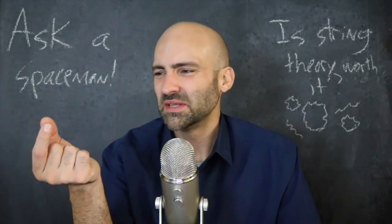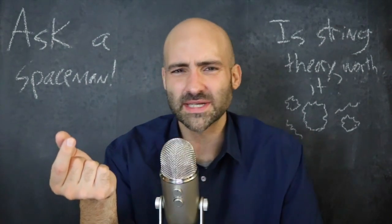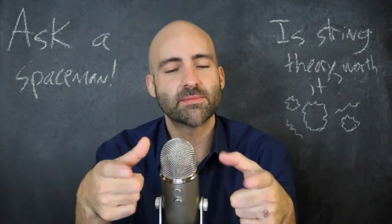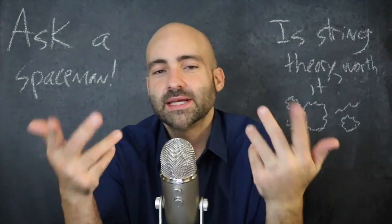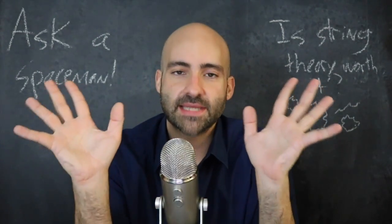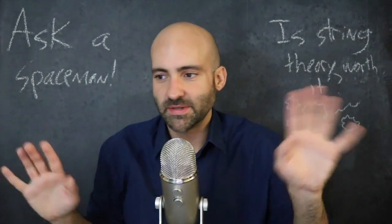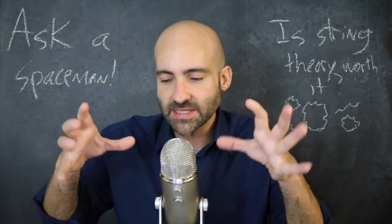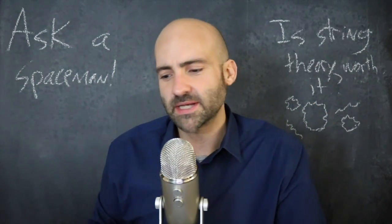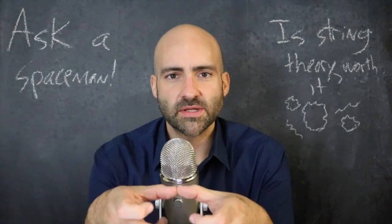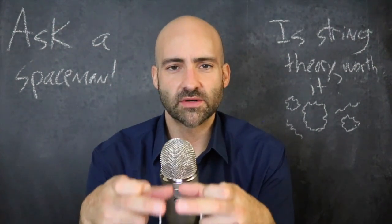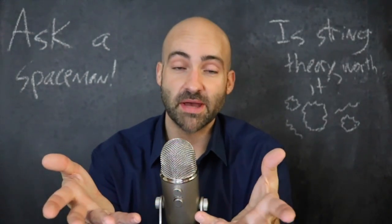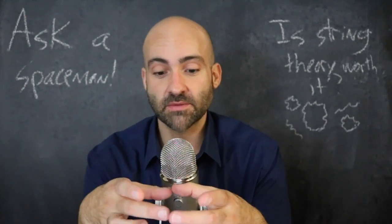What does it mean for a little string to carry a force? Imagine a little loop of wire and it vibrates. Why does it vibrate? Because quantum mechanics says at very tiny scales nothing can stay still — everything's always going to vibrate, wiggle, or jiggle. So say you have a loop, a little string, vibrating a certain way. That represents a certain amount of energy, and a certain amount of energy means a certain amount of mass, because E equals mc squared.